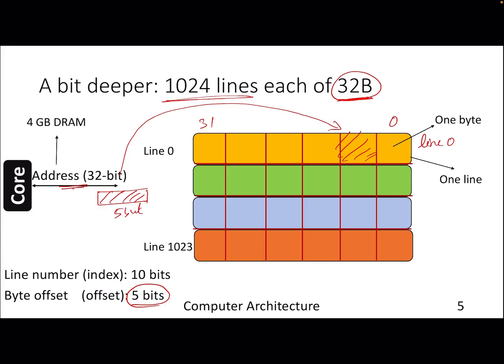We should also know from which line we want a particular byte, because cache stores data in the form of lines. Since we have 1024 lines, we need another 10 bits to find out a line number — also known as the indexing bits — because we are indexing into a particular line to find our data. We are done with 15 bits, but we still have 17 bits left from the processor.